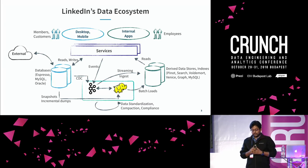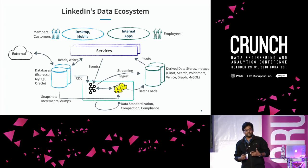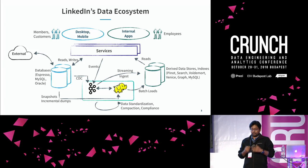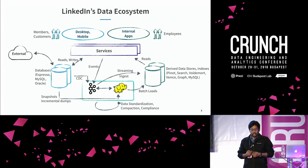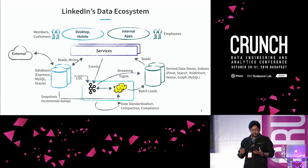On the other side, we see there is a derived data store, which is basically all the data that has been processed by different teams within LinkedIn — the relevance team, teams building products that have pre-crunched some data and want to serve back to you. An example would be 'people you may know' recommendations generated based on your friend list and who your friends know. That derived data is stored in indexes for search, in Pinot for OLAP queries, in a graph database, or in MySQL for simple serving.